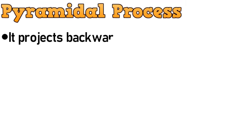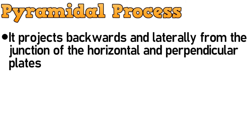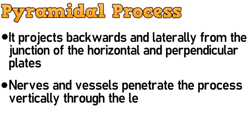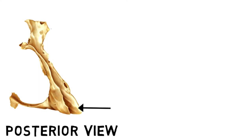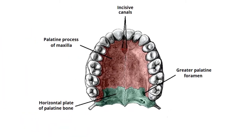Starting with the pyramidal process. It projects backwards and laterally from the junction of the horizontal and the perpendicular plates, and nerves and vessels penetrate the process vertically through the lesser palatine canals. So this process projecting backwards is the pyramidal process, and as you can see it projects from the junction of the horizontal and the perpendicular plate. These small holes are the lesser palatine foramen through which the nerves and vessels penetrate.